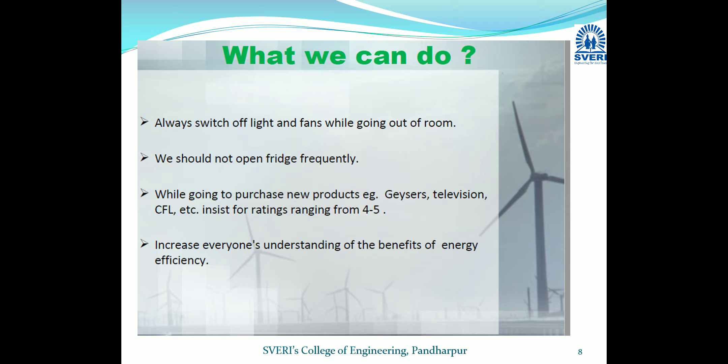While purchasing new products such as televisions, CPLs, and other appliances, we should always check the star rating on the label. Maximum star rating indicates the equipment saves maximum energy or consumes minimum energy. At the time of purchasing home appliances like TVs, fridges, and coolers, we must check the label attached to the equipment.